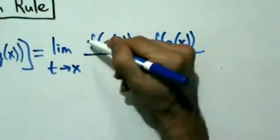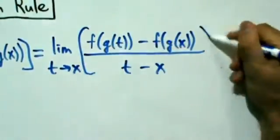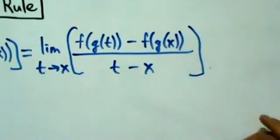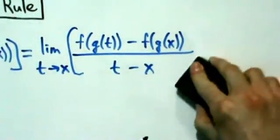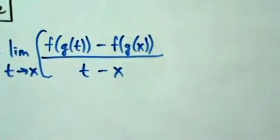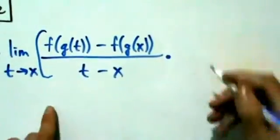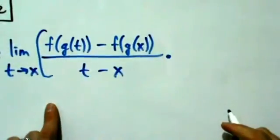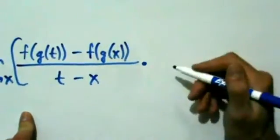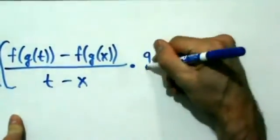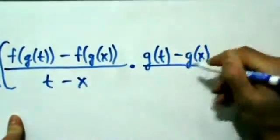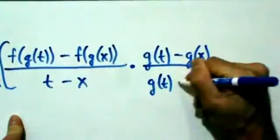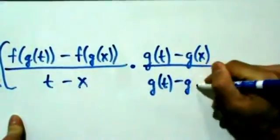We have a limit as t approaches x of this. Inside of this limit, I want to multiply the top and the bottom by g(t) minus g(x) — in other words, we're going to multiply by [g(t) − g(x)] divided by [g(t) − g(x)].